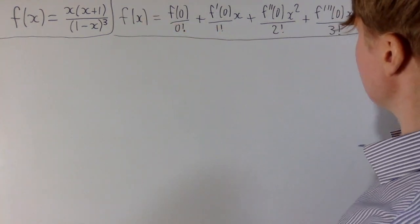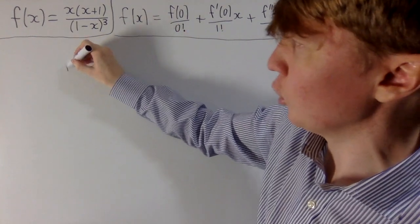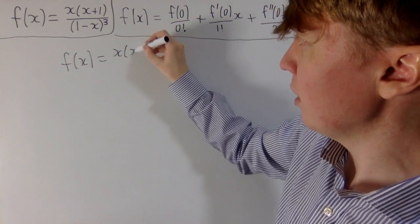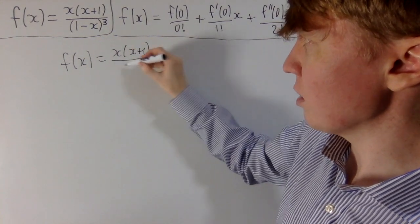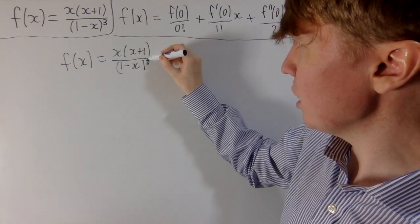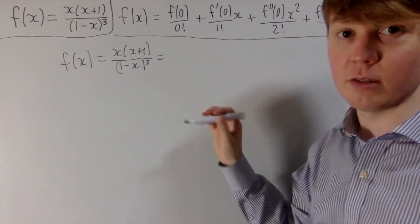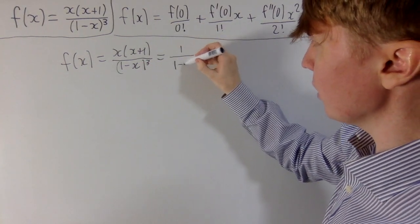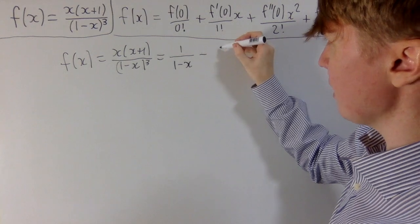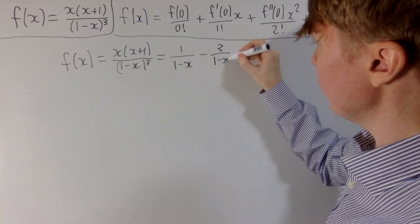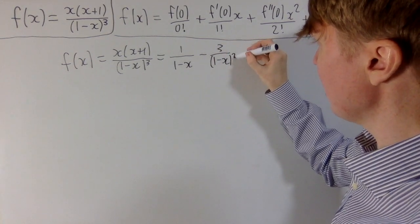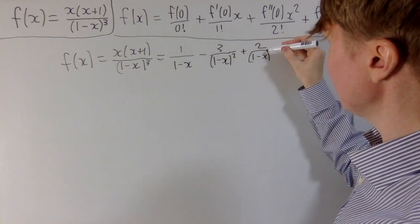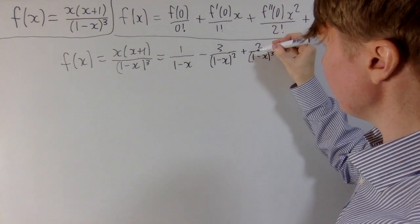What I'm going to do is put it into partial fractions form, and then you'll find this makes it much, much simpler to differentiate repeatedly. I'm not going to go over all the details of how to put it in partial fractions form — you can pause and verify this if you like — but you get the nice format: 1/(1-x) minus 3/(1-x)² plus 2/(1-x)³. Do verify that if you like.